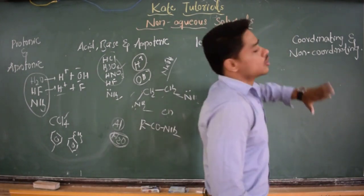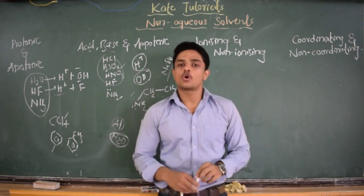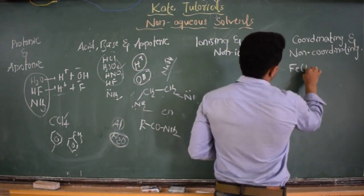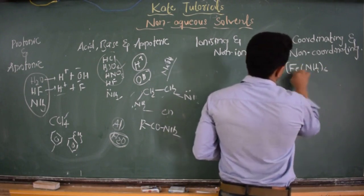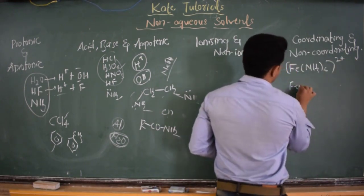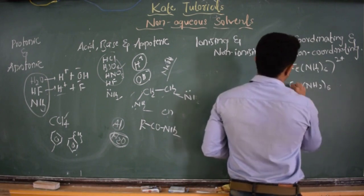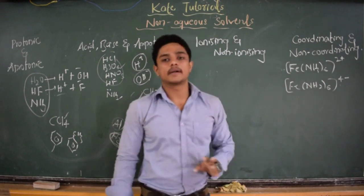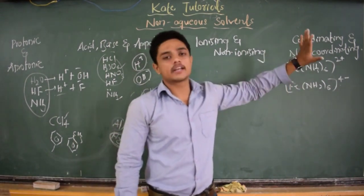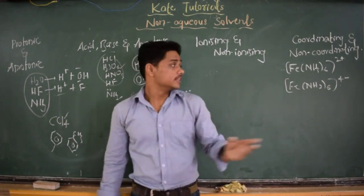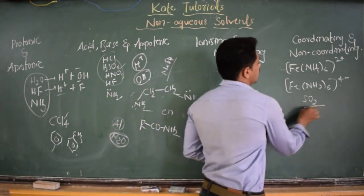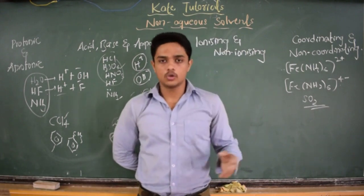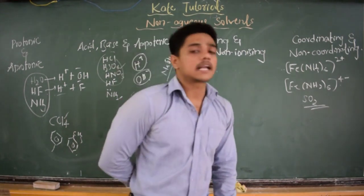What about coordinating and non-coordinating solvents? In coordination chemistry, we see complexes where metal ions coordinate with ligands — for example, [Fe(NH₃)₆]²⁺ or [Fe(en)₃]⁴⁻. Solvents like NH₂⁻ (amide) and SO₂ form coordinating bonds with the metal atom — these are examples of coordinating solvents. The non-coordinating solvents are again the organic solvents, because they are not going to coordinate with the metal atom. This is the classification of solvents.